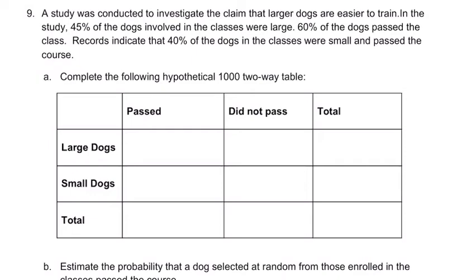We're told that a study was conducted to investigate the claim that larger dogs are easier to train than smaller dogs. In the study, 45% of the dogs involved were large.